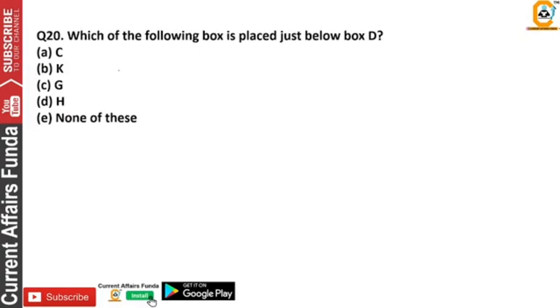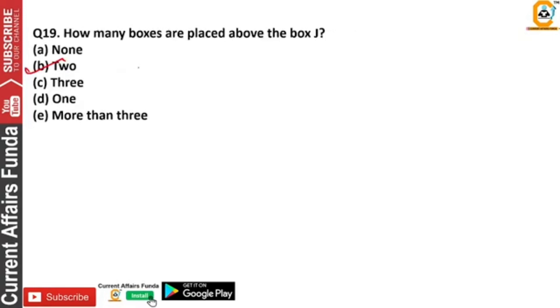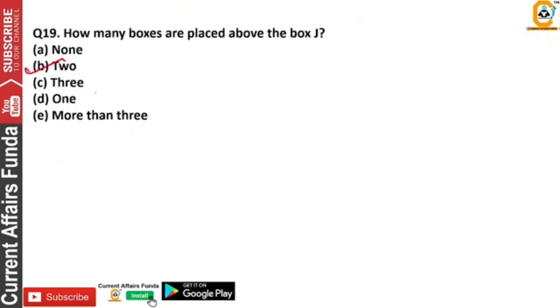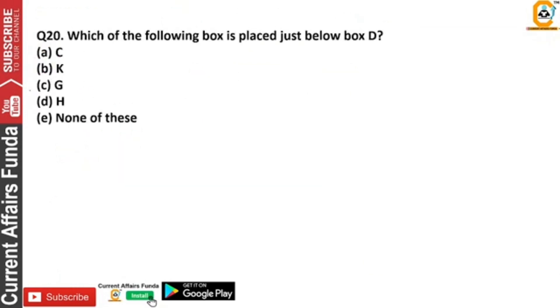Then we are asking: which box is below D? D is just below G. So G is the answer — option C is right, G.